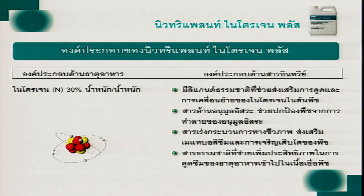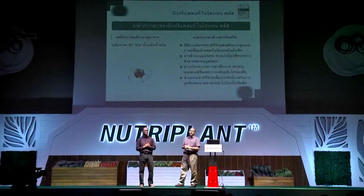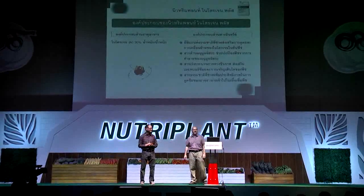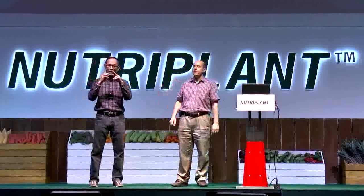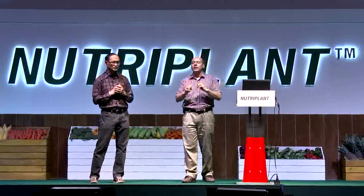Let's talk about natural ligands. What are natural ligands? Those are the amino acids, carboxylic acids, and carbohydrates. Why are these organic components so important? We are combining the amino acids, carboxylic acids, and carbohydrates with the minerals to improve the absorption and translocation in the plant.